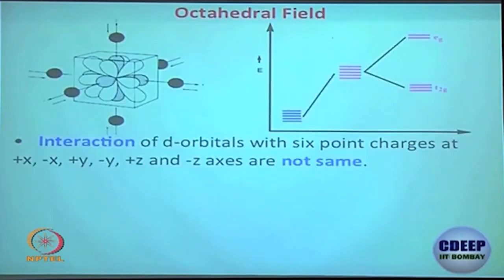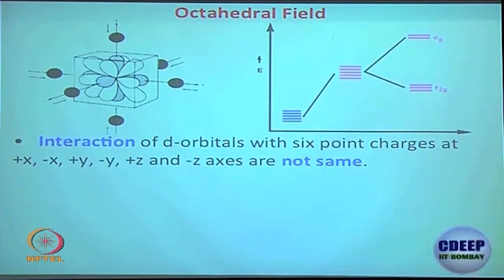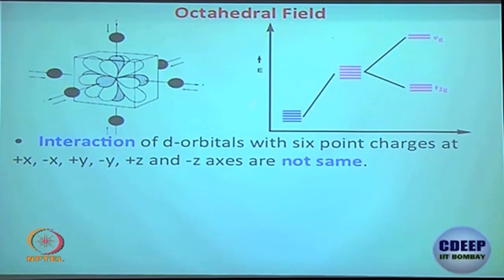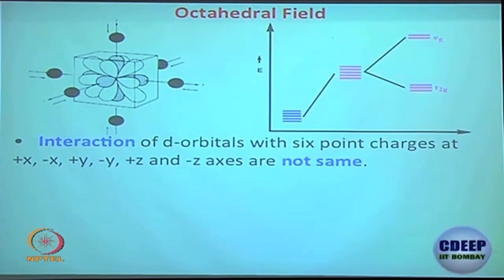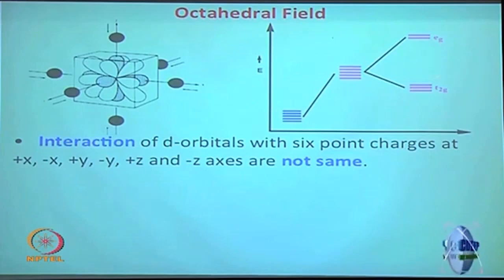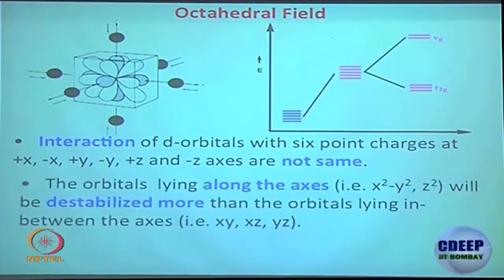The total stabilization and total destabilization must be equal for a completely filled configuration. In an octahedral field, 6 ligands approach the metal. Three T₂g orbitals are stabilized and two E_g orbitals are destabilized. Note: for octahedral it is E_g and T₂g, not E and T₂ which are used for tetrahedral.